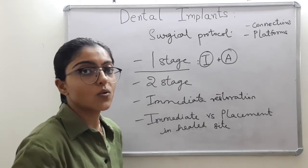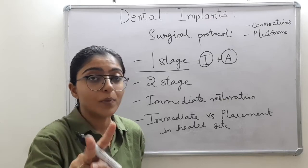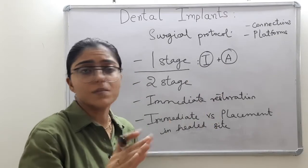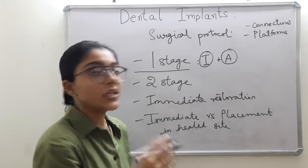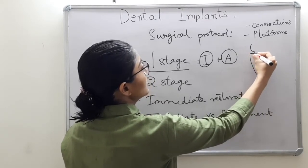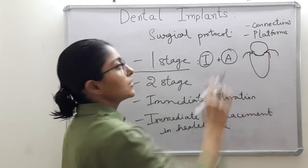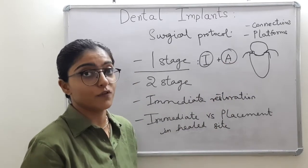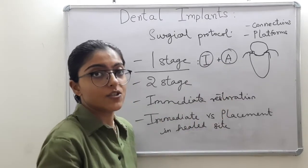In one-stage, we place the implant and connect the abutment in the same visit. The flaps are sutured, meaning the abutment will be visible clinically, emerging from the soft tissue. In two-stage, we perform these two steps in two separate surgical or clinical visits. In the first visit, we place the implant, but instead of connecting the abutment, we use a cover screw — also called a healing screw — to cover the connection chamber, then suture the flaps over it.